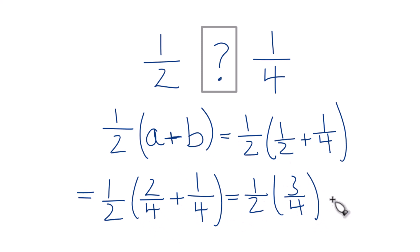Now when we multiply fractions, we're going to multiply the numerators and the denominators. 1 times 3 is 3. 2 times 4 is 8.